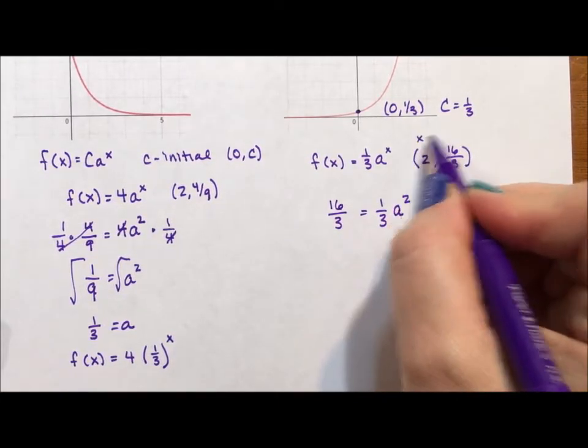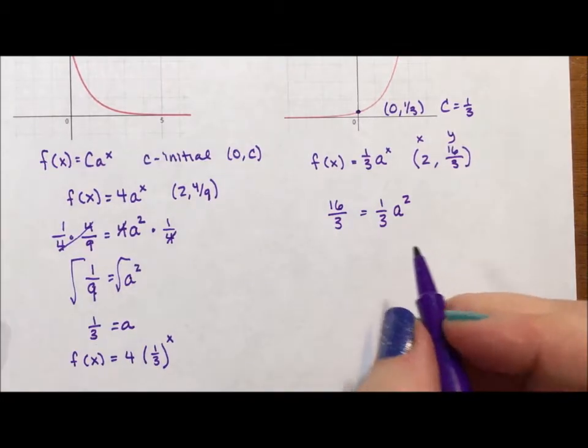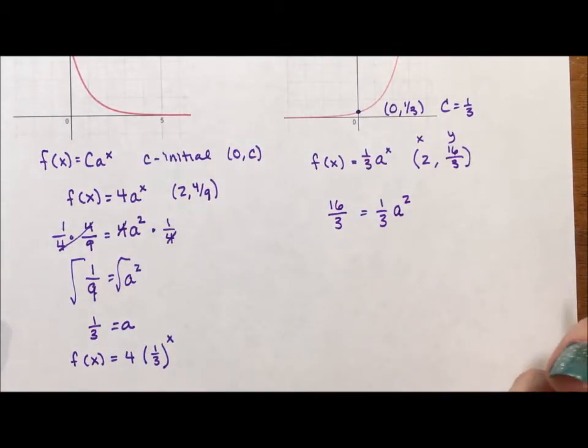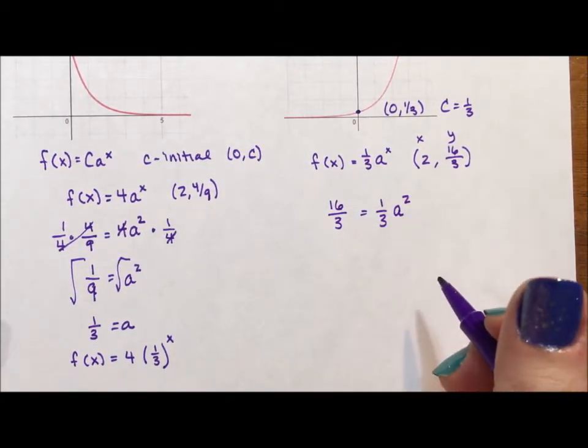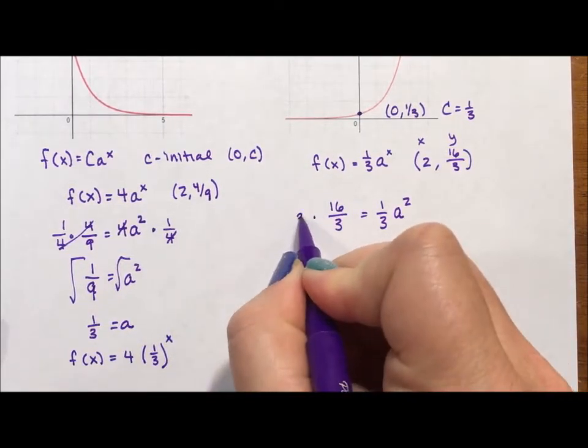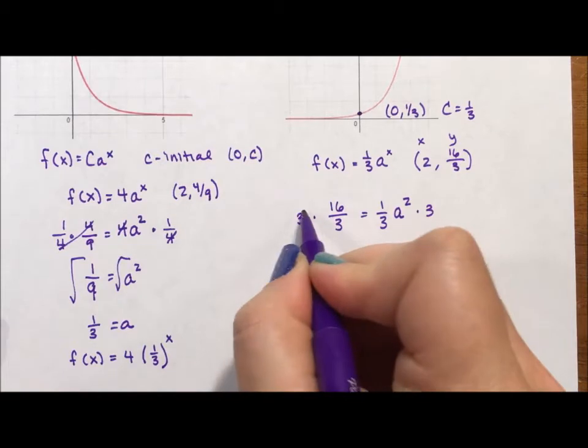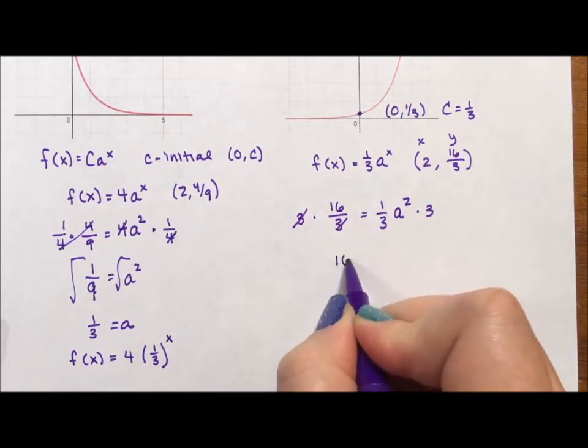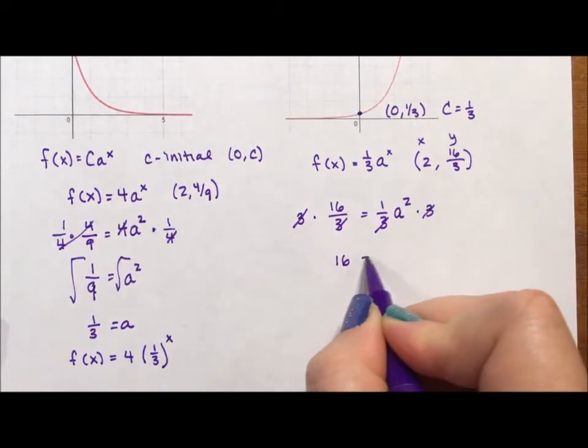For y, we put 16/3 = (1/3)a². This is my x value. This is my y value. And f(x) and y are the same thing. You can see my videos on function notation if you're not positive about that. So now I'm going to multiply both sides by 3 to clear my fraction. So the 3s cancel and I'm left with 16. The 3s cancel and I'm left with a².